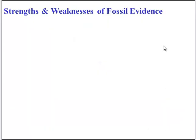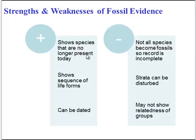Fossil evidence has strengths and weaknesses. A key strength is that it shows us species that are no longer present today, and we can put life forms in a sequence based on relative or absolute dating. However, the fossil record is very incomplete — not all species become fossils. Also, if you're relative dating, you have to make sure the strata is undisturbed, otherwise your sequence is not valid. Additionally, fossils may not show how related groups are — they might just show how old they are.